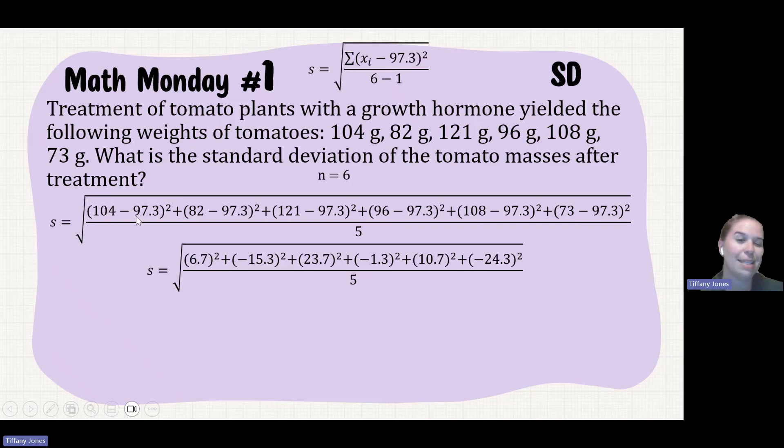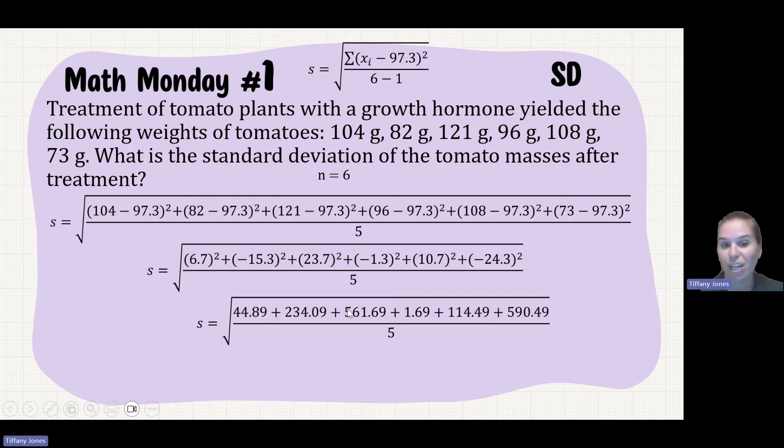And I did that for each of those, I found their differences. I then squared each of those differences, added all of them together, gives me 1547.34. And I divide that by five, and that will give me the square root of 309.468.